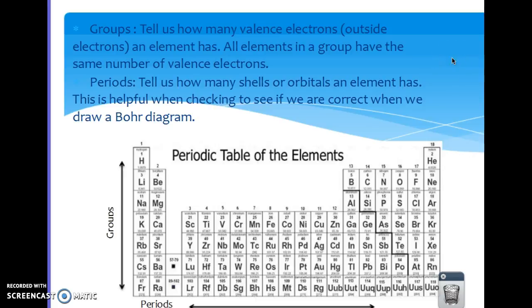The group tells us how many valence electrons there are, and then also tells us a little bit about their reactivity, and the period tells us how many shells or orbitals the element has. This is helpful to check when you're seeing if you have the correct Bohr diagram.